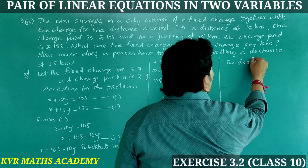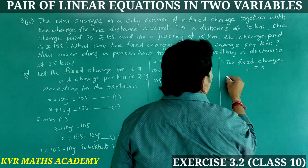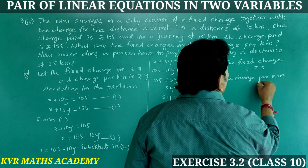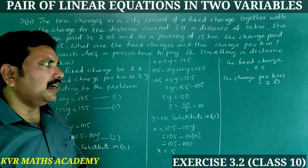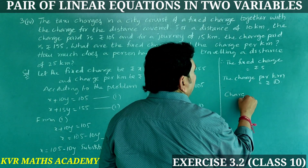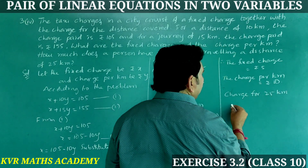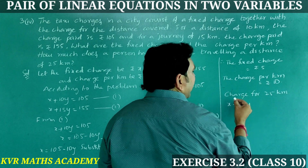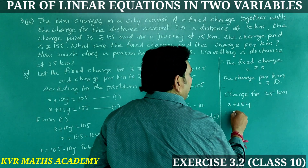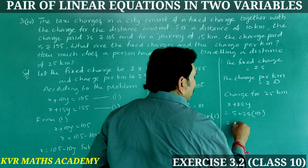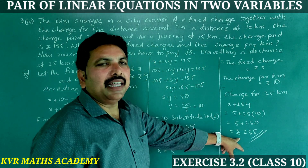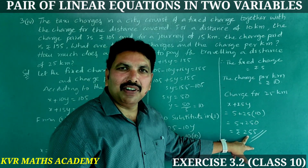Therefore, the fixed charge is equal to Rs. 5 and the charge per kilometer is equal to Rs. 10. Now find the charge for 25 kilometers: X + 25Y = 5 + 25 × 10 = 5 + 250 = Rs. 255. The person traveling 25 kilometers will pay Rs. 255.